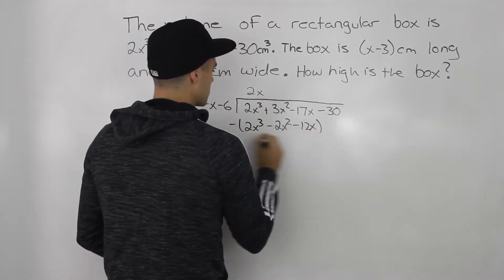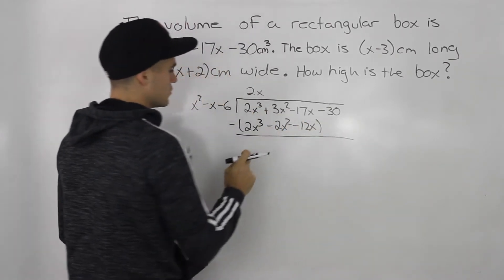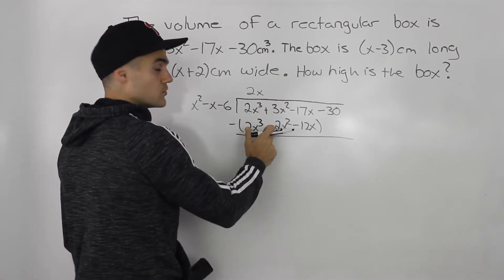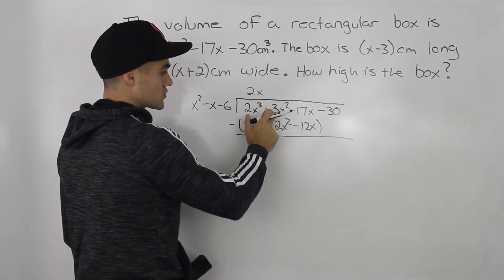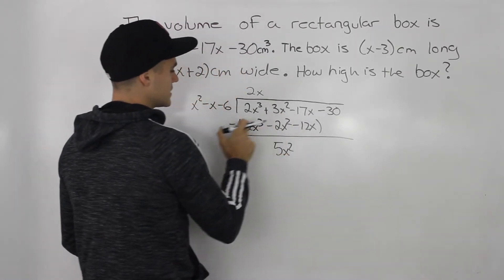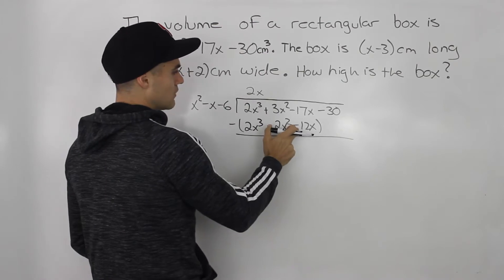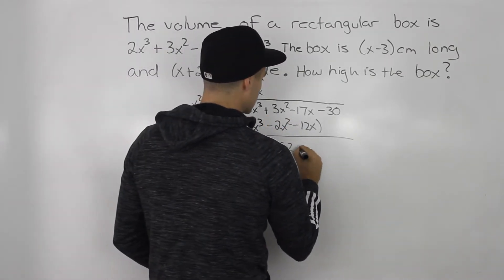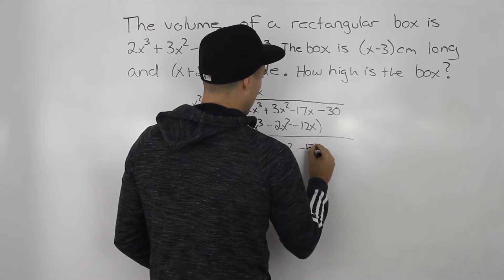So then we subtract these two. The 2x³ cubes will net out to 0. 3x² minus negative 2x² - that's the same thing as 3x² plus 2x², which is 5x². -17x minus negative 12x, so -17x plus 12x. That would give us -5x.